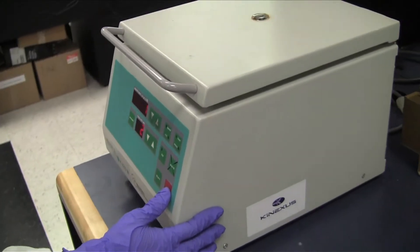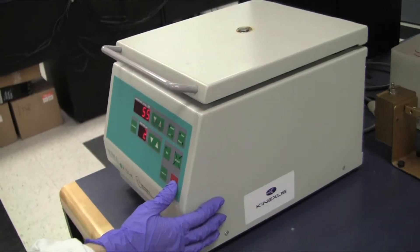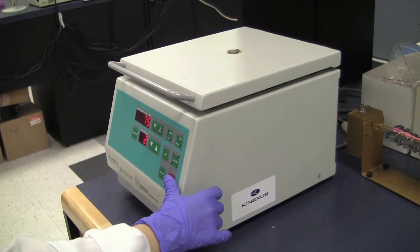Centrifuge the tubes containing the whole labeling reaction briefly at 750 times G.